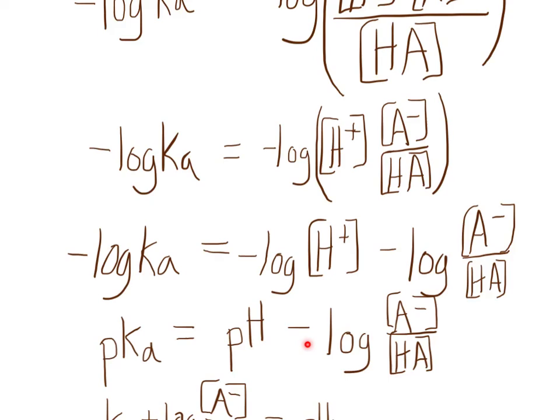So just rearranging it, we just have to take this part and throw it on the other side of the equation, and now we have pKa plus the log of the conjugate base divided by the acid equals pH. And then I just rearranged it to make it look like what you're familiar with. pH equals pKa plus the log of the conjugate base divided by the acid. And there you have it, we just derived the Henderson-Hasselbalch equation.